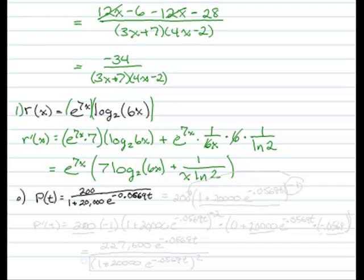Finally, we're going to look at 16 and taking the derivative of a logistic function, the best thing to do is rewrite it as 200 times 1 plus 20,000, e to the negative 0.0569t to the negative 1. Because now we can use our general chain rule.